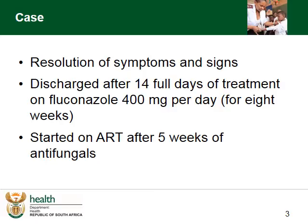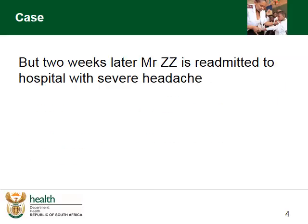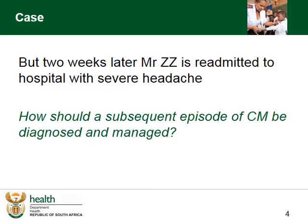Mr. Zizi is finally discharged from hospital. All his symptoms have resolved and after 5 weeks of treatment he was started on ARVs by his local community health centre. But 2 weeks after the initiation of ARVs, Mr. Zizi is readmitted to hospital with severe headache. How should a subsequent episode of cryptococcal meningitis now be diagnosed and managed?